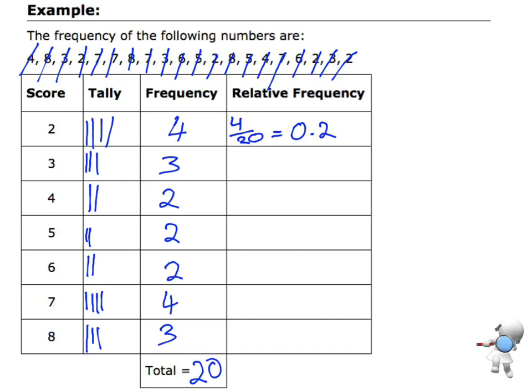A score of 3 has a frequency of 3 out of the total of 20, giving us a relative frequency of 0.15. A score of 4 has a frequency of 2, so that's a relative frequency of 2 out of 20, which is 0.1. A score of 5 has a relative frequency of 2 out of 20, which is also 0.1.